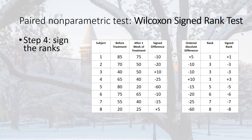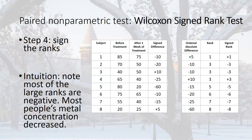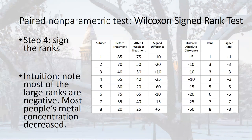Step four: sign the ranks. Take the ranks from step three — 1, 3, 3, 3, 5, 6, 7, 8 — and go back to get the sign from each difference. The signed rank is plus 1 because rank 1 came from a difference of plus 5. Minus 3 because that rank came from minus 10 — the person's concentration decreased. The plus 3 came from an observation where the person increased their concentration. Notice most of the big numbers are negative, meaning most people who changed a lot decreased.